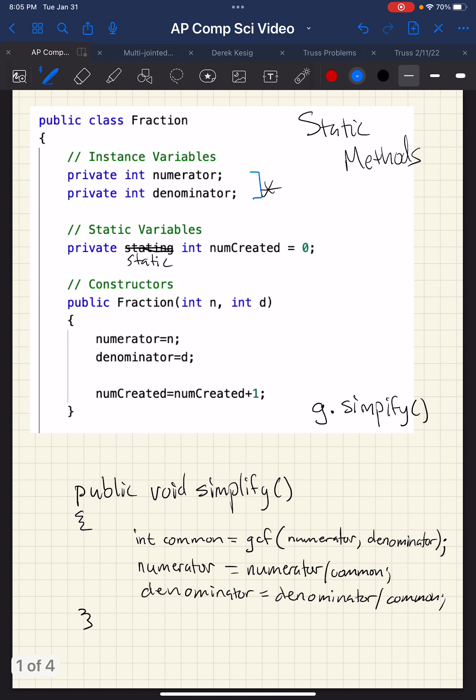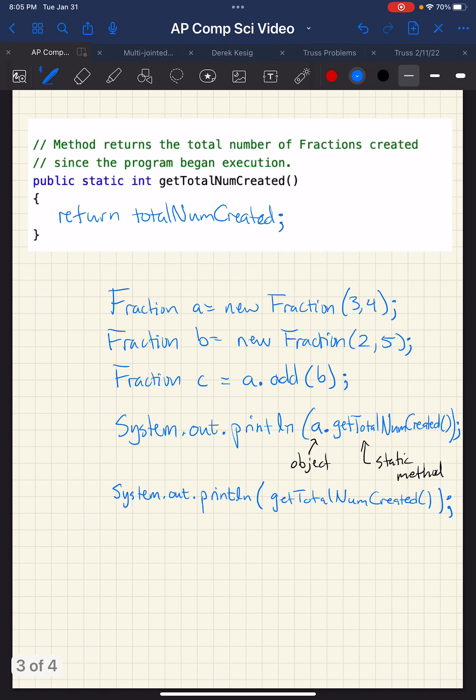If you look back here, for simplify, I can just call GCF because we're inside the fraction class. Even though it's not one specific fraction, we're inside the fraction class, so I just call that method. Here I can't. Right. This also, this one and this one don't work.